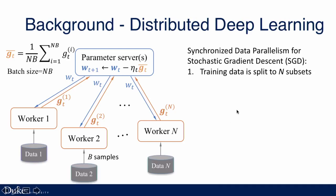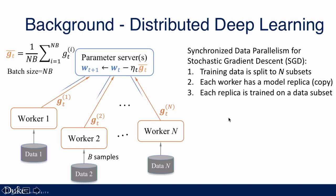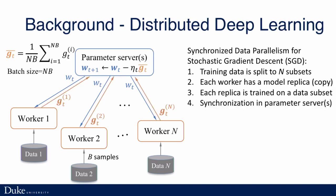First, the training data is split to N subsets and we also have N workers. Each worker has a model replica or model copy. When the training starts, each worker will pull the parameters from this shared parameter server to train each model replica using its training data subsets. After the training, the gradients from each worker will be updated to the shared parameter server to update the parameters.